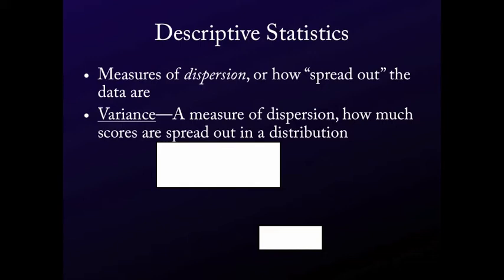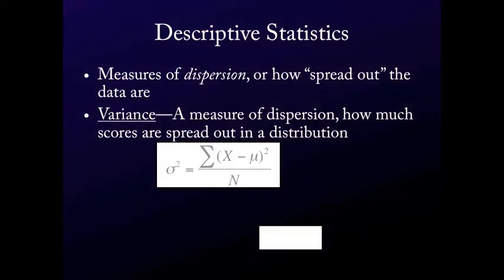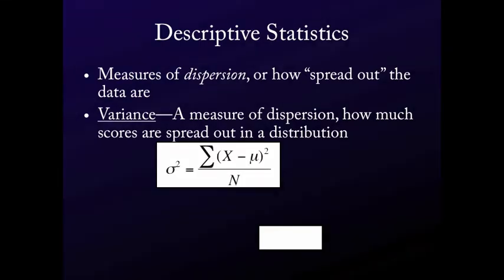Variance is just a measure of how spread out scores are in a distribution. This is the formula for it, right here, and you'll notice what you're doing is you're taking each individual score, x, you're subtracting it from the mean. So you're looking at how far off of the mean is every single score. So if you get 102 and the mean is 100, that difference is going to be 2. And then you square them all, and you sum them all together. So you take all of these distances, you square them, and then you sum them, and then you divide by the number of scores that you see in the population, or the number of scores that you're summing over.